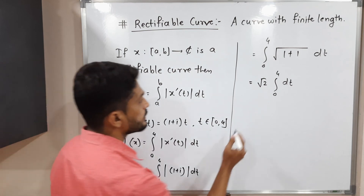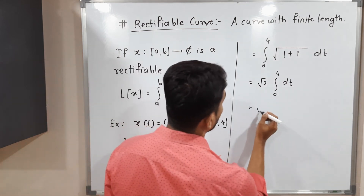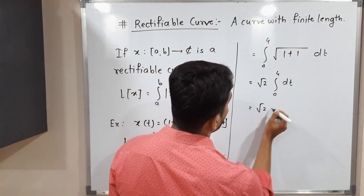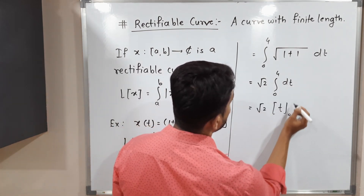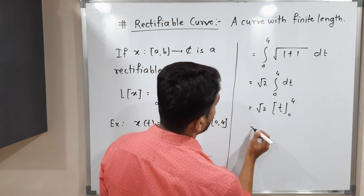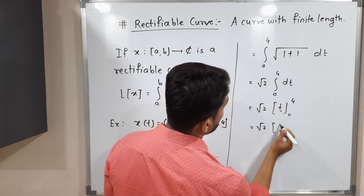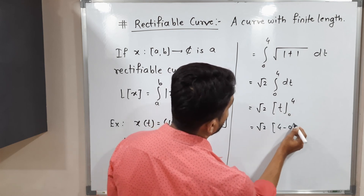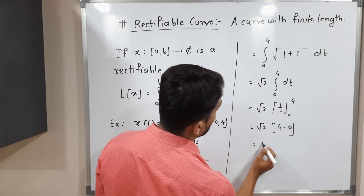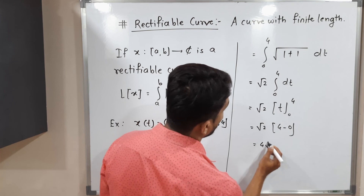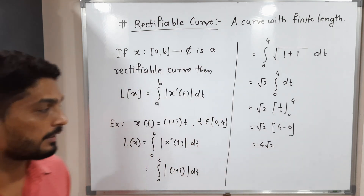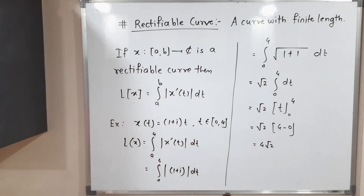So this equals √2 · [t] from 0 to 4 = √2 · (4 − 0) = 4√2. So the length of the given curve is 4√2. Make a screenshot of it. Thank you, bye bye.